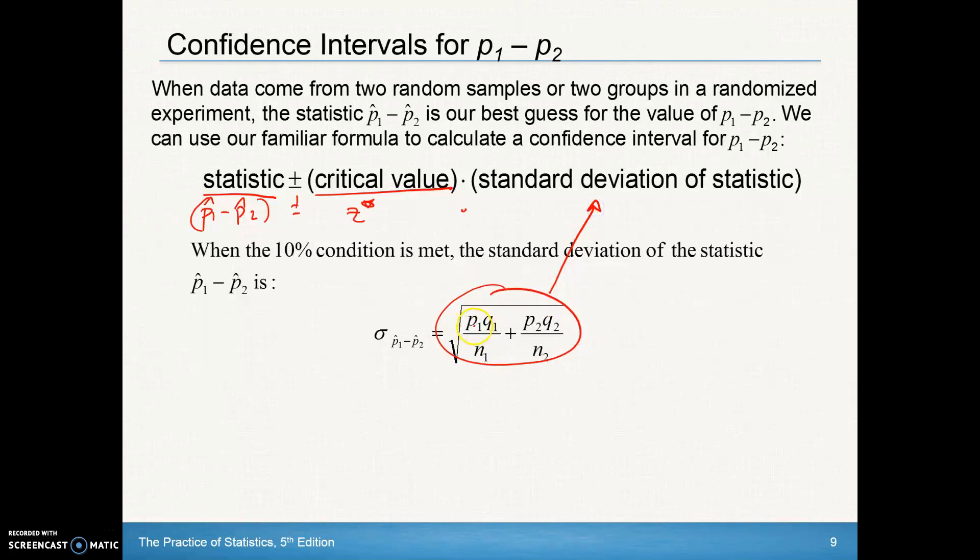If we are given the P1, if we're given those population proportions, we use those. Otherwise, we might have to use the standard error instead of standard deviation, if we're not given those when testing, and use P-hat and Q-hat.